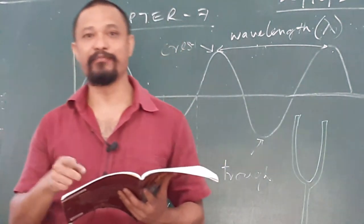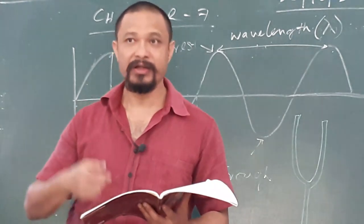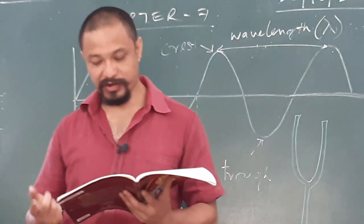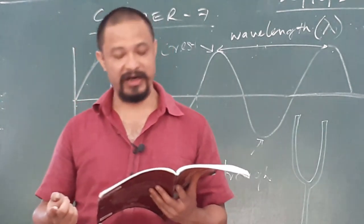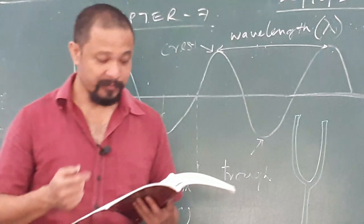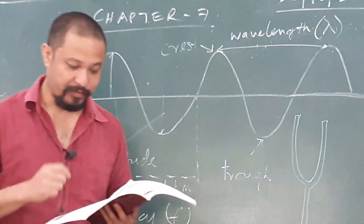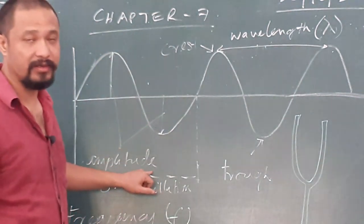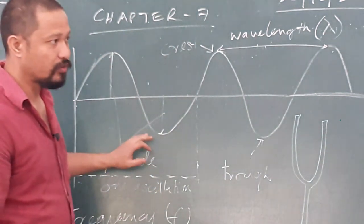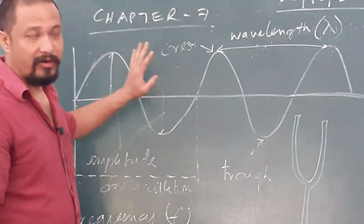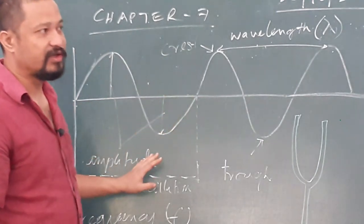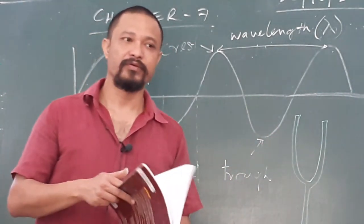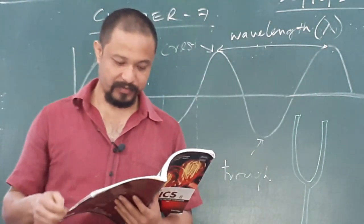Loudness of a sound depends on its amplitude. Higher the amplitude, louder the sound. Lower the amplitude, lower the sound. As the amplitude of the wave is directly related to the energy it carries, greater the energy carried by a wave, louder is the sound produced. Lesser the energy carried by a sound wave, feebler will be the sound.